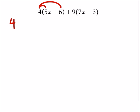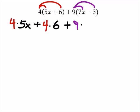So first I have 4 times the 5x, and then I'll add 4 times the 6. And then I'll add this to, now I'm going to distribute the 9 into this set of parentheses. So that's 9 times the 7x minus 9 times the 3.